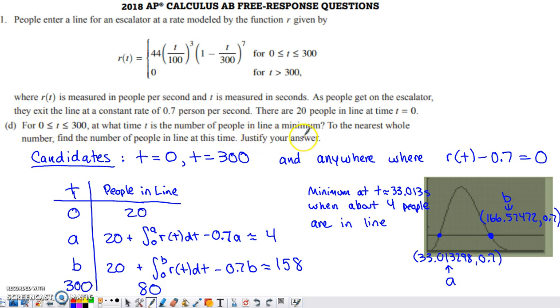What counts for the justification in a situation like this is if you identify all the candidates where you might attain that maximum or minimum and then compare the number of people in line at each of those candidates. The smallest one is your minimum and the biggest one is your maximum. Endpoints of the closed interval are definitely candidates for both the minimum and the maximum. And then also anywhere where your derivative is equal to 0.